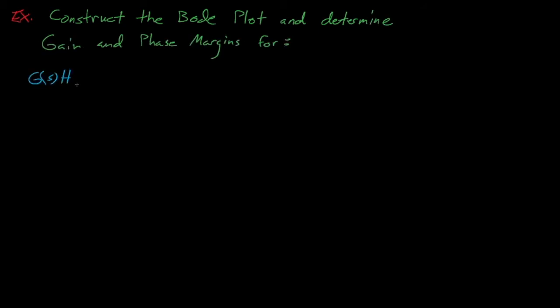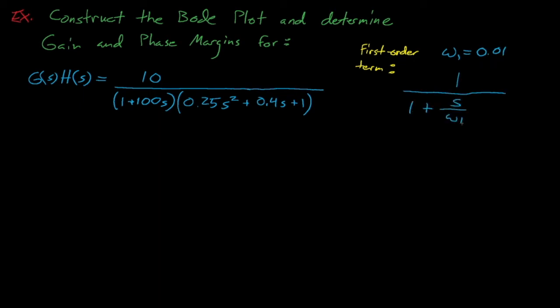Let's finish this lecture by constructing Bode plots for some sample system and finding its gain and phase margins. In this case, H(s) equals 1 and G(s) is equal to 10 divided by (1 plus 100 times s) times (0.25 times s squared plus 0.4 times s plus 1). To generate our Bode plots, we first need to find our breakaway frequencies.